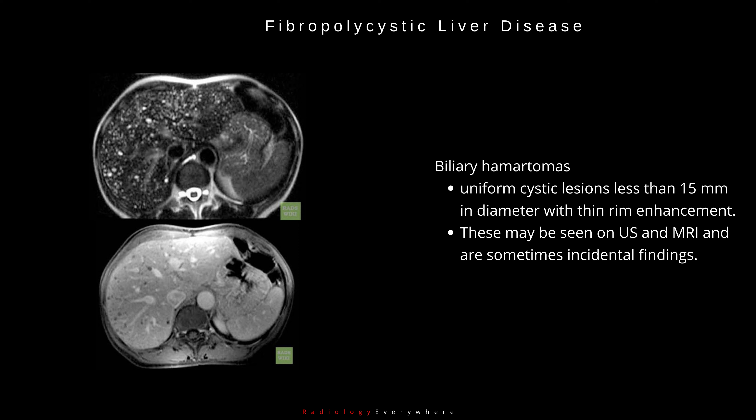Biliary hamartomas are uniform cystic lesions, less than 15 mm in diameter, with thin rim enhancement. These may be seen on ultrasound and MRI, and are sometimes incidental findings. The entity has not been comprehensively described in children.